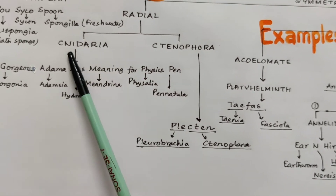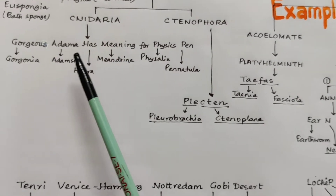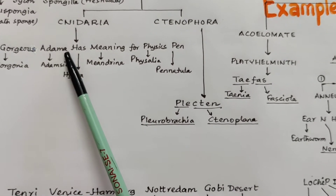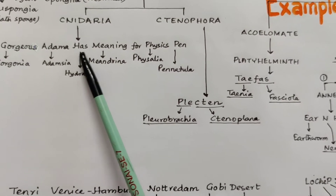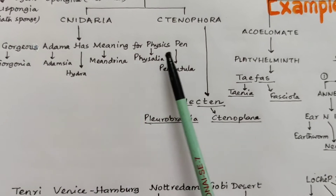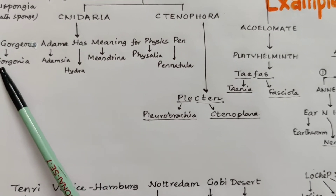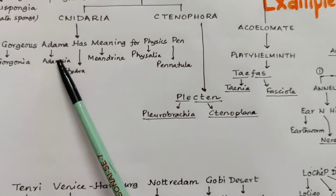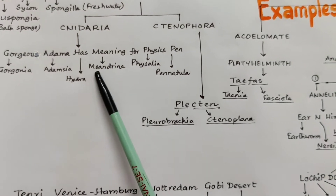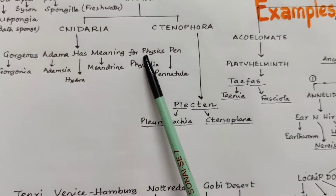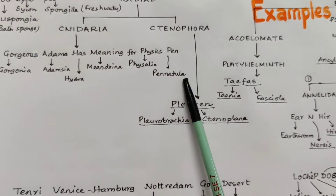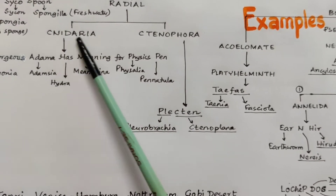For learning the examples of Phylum Cnidaria, we have to learn this shortcut: 'Gorgeous Adama H M Physics Pen.' Gorgeous comes from Gorgonia, meaning sea fan. Adama for Adamsia. H for Hydra. M for Meandrina. The first P for Physalia, and the second P for Pennatula. These are all cnidarians.